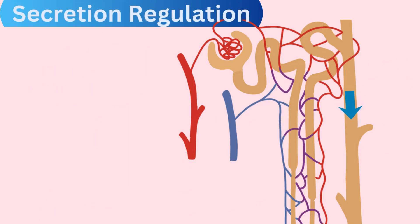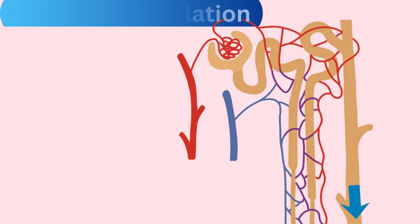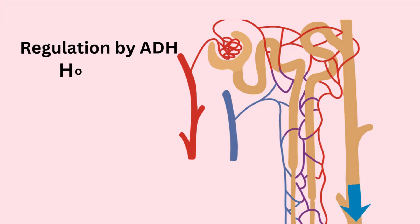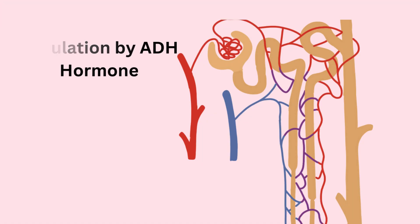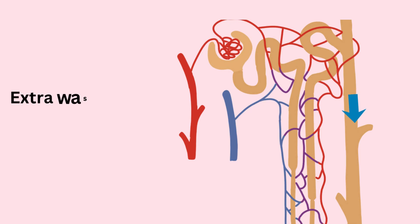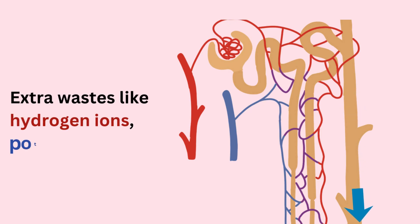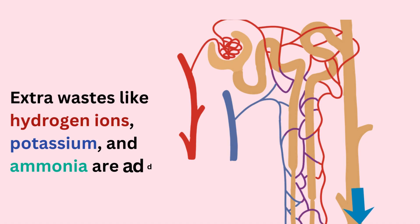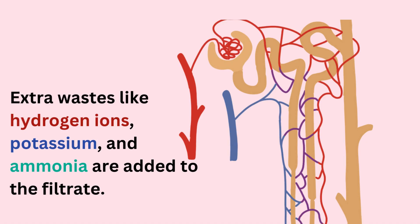Step 3: Secretion and regulation in the collecting duct. According to ADH hormonal signals, extra wastes like hydrogen ions, potassium, and ammonia are added to the filtrate to fine-tune your body's balance.